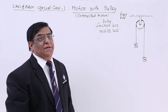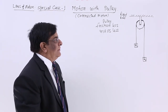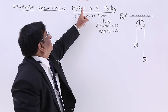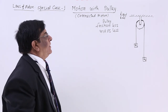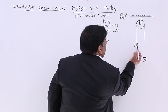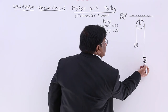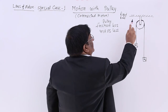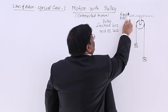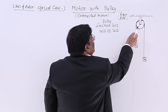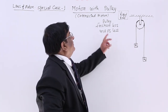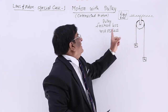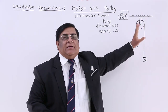We will study some special cases of force application, and the first case is connected motion — motion with a pulley. Here one body has mass M1 and the other has mass M2. They are connected with a string passing over a pulley fixed to a rigid roof. For convenience, we assume the pulley is frictionless and massless.